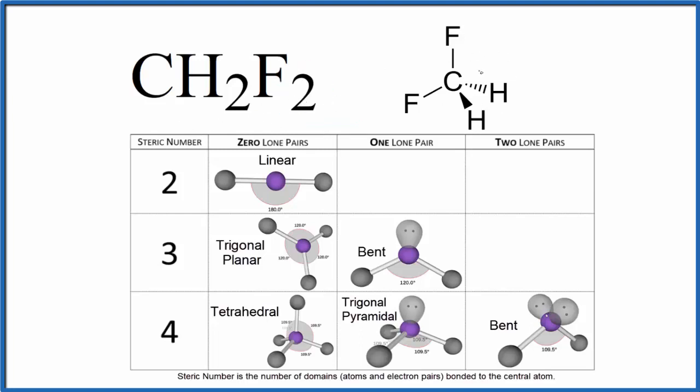The first way is to look at the Lewis structure and the steric number. The steric number is the number of things attached to the central carbon. We have one, two, three, four things.